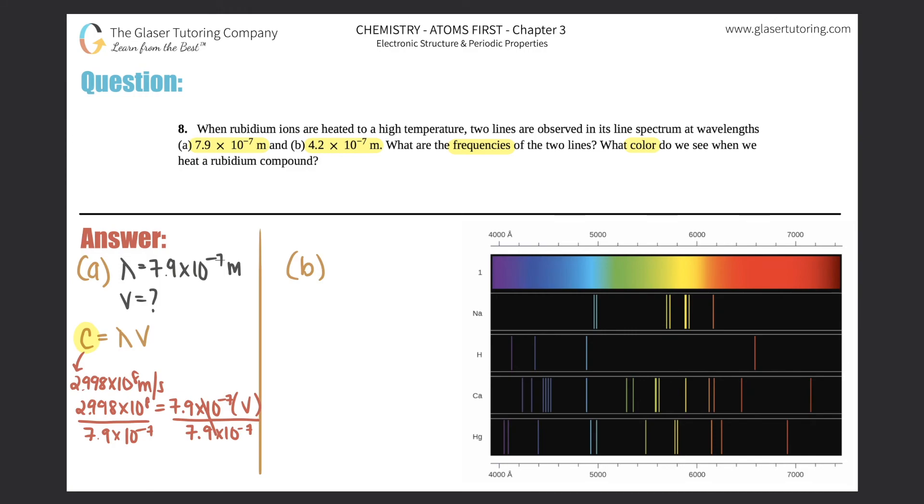This gives us 3.8 × 10^14, and that's per second—so s^-1, or if you want to say hertz (Hz), that's fine too. That's the frequency for the first one. Now let's do the same thing for the second one.